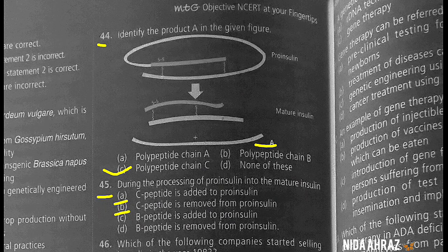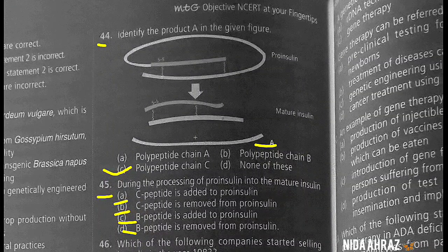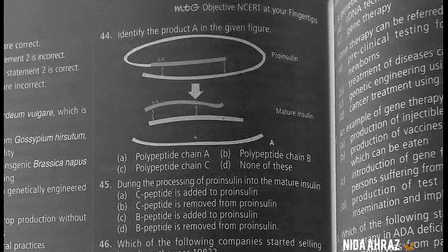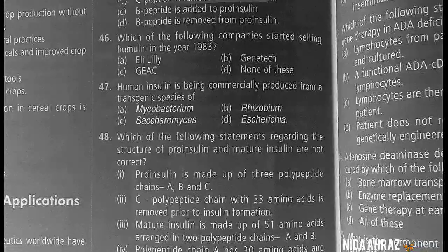During the processing of proinsulin into mature insulin, C peptide is removed from proinsulin. So the correct choice is option B: C peptide is removed from proinsulin.